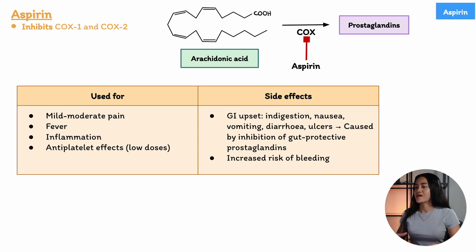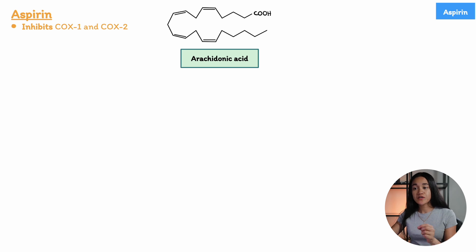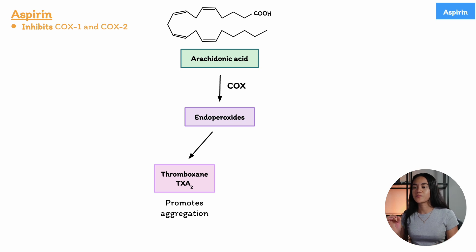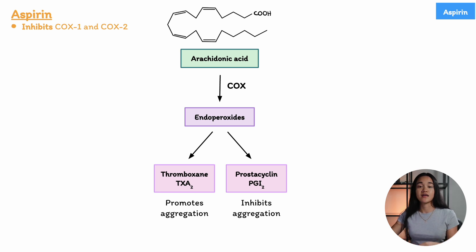Let's talk about how aspirin affects platelet activation and aggregation. It targets the synthesis of two key eicosanoid mediators derived from arachidonic acid. Arachidonic acid is metabolized by cyclooxygenase to produce endoperoxides, which then produce two different eicosanoid mediators involved in regulating platelet activation. We have thromboxane A2, which promotes the activation and aggregation of platelets, and this molecule is produced primarily in platelets.